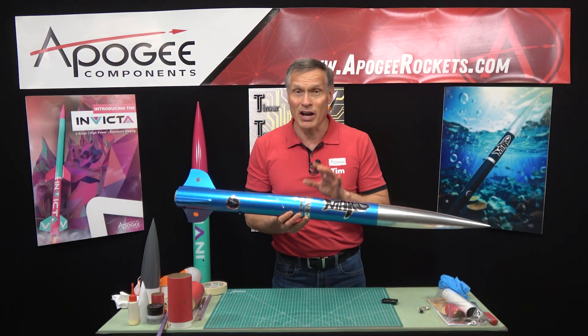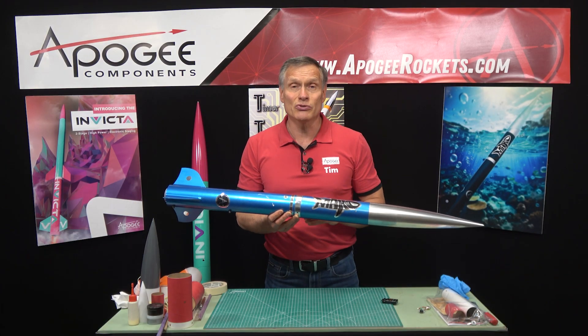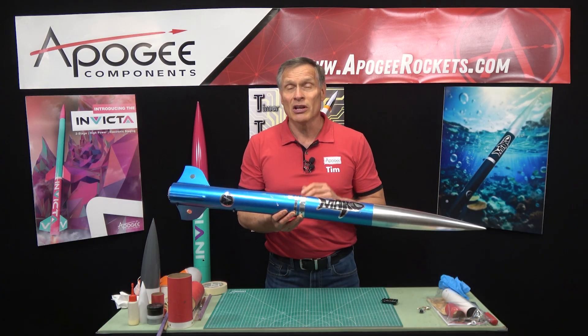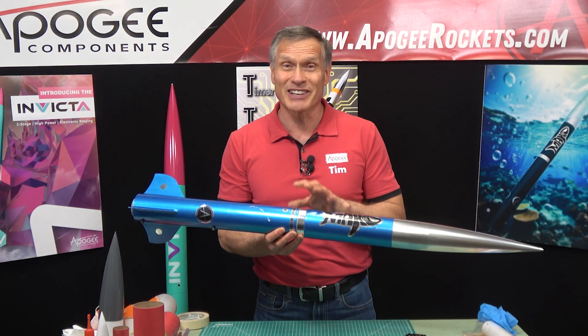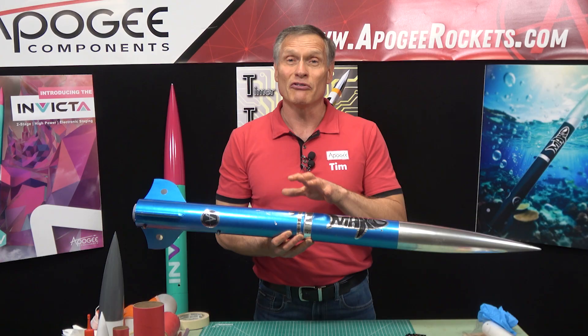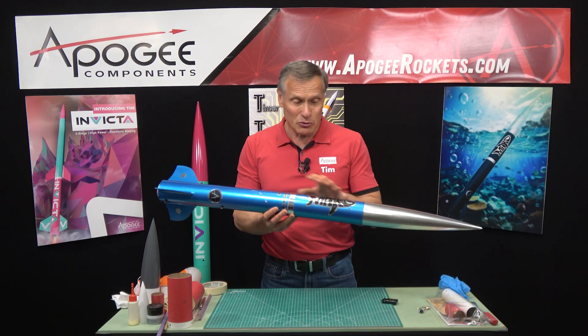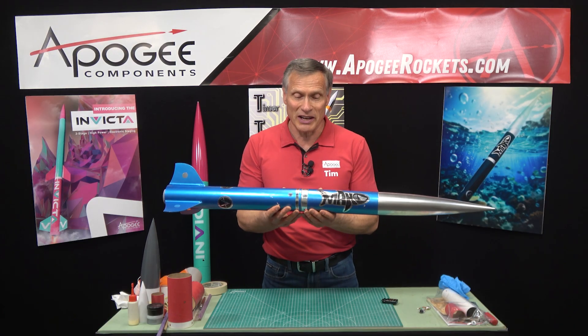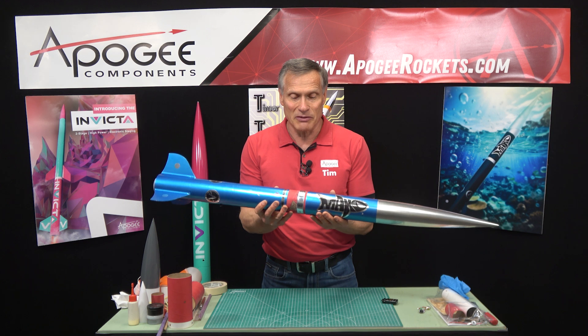It's used a lot in high power but it can be used in small rockets as well. We do have a small rocket we call the Katana Jr. which is great for learning dual deployment. But this one here is kind of a mid-power rocket and it also is set up for dual deployment.